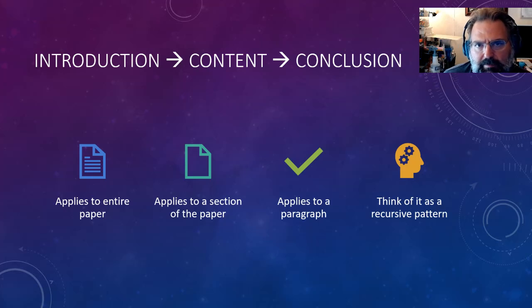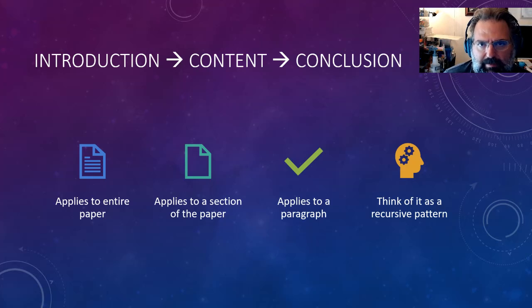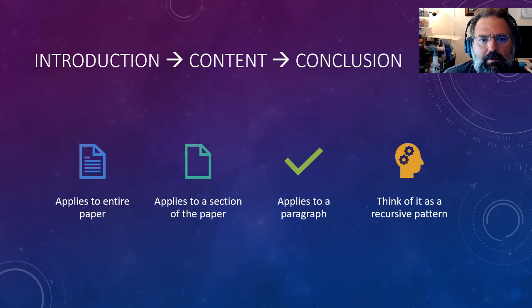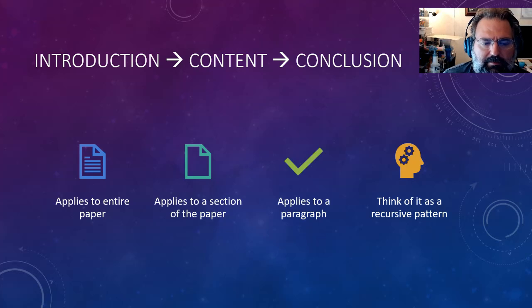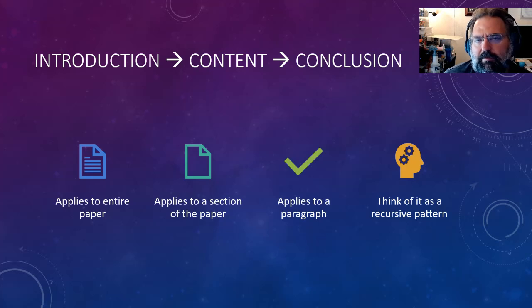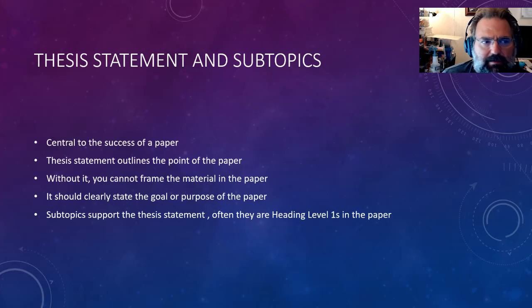A conclusion mirrors the introduction. It restates the thesis statement — generally speaking in past tense, though that's a style thing. Basically the conclusion reminds the reader of what the thesis statement was and what you talked about that addressed it and supported any claims. A key concept is that generally you don't want to introduce anything new in the conclusion, which means you likely won't have any citations there. Rather, you're restating things previously stated, demonstrating that you did what you set out to do. This is also a recursive pattern — it applies to paragraphs and even to sections of a paper.